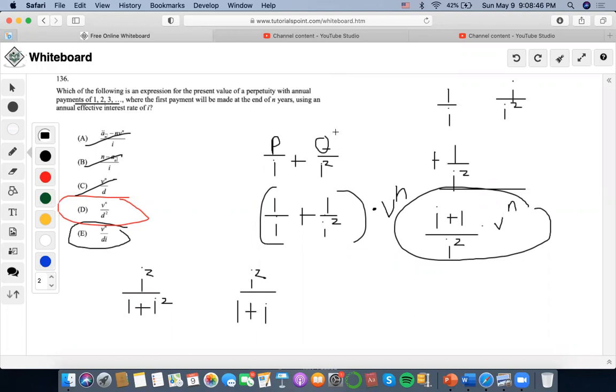So obviously the P and Q formula for perpetuity is this. So first term would be one, so one's here. It would increase by one, so here. And it said the first payment will be made at the end of N years, so that's why I defer to N years.